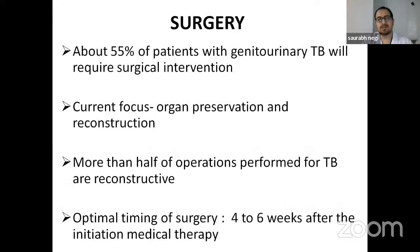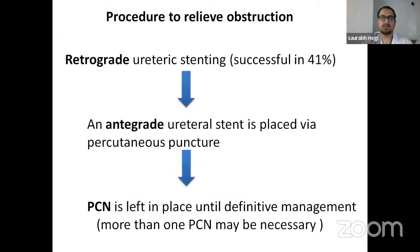In surgery, about 55% of patients with genitourinary TB will require surgical intervention. The current focus is organ preservation and reconstruction — more than half of operations performed for TB are reconstructive. The optimal timing is four to six weeks after initiation of medical therapy. The initial procedure to relieve obstruction is retrograde ureteric stenting, successful in 41% of cases. If not possible, antegrade ureteric stenting via percutaneous puncture is attempted. If still not possible, a PCN is left in place until definitive surgery.